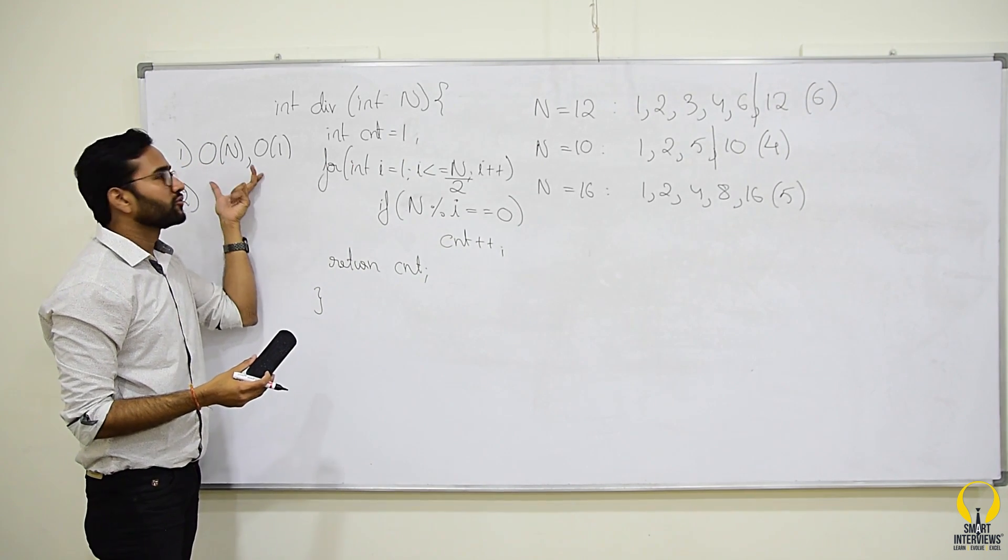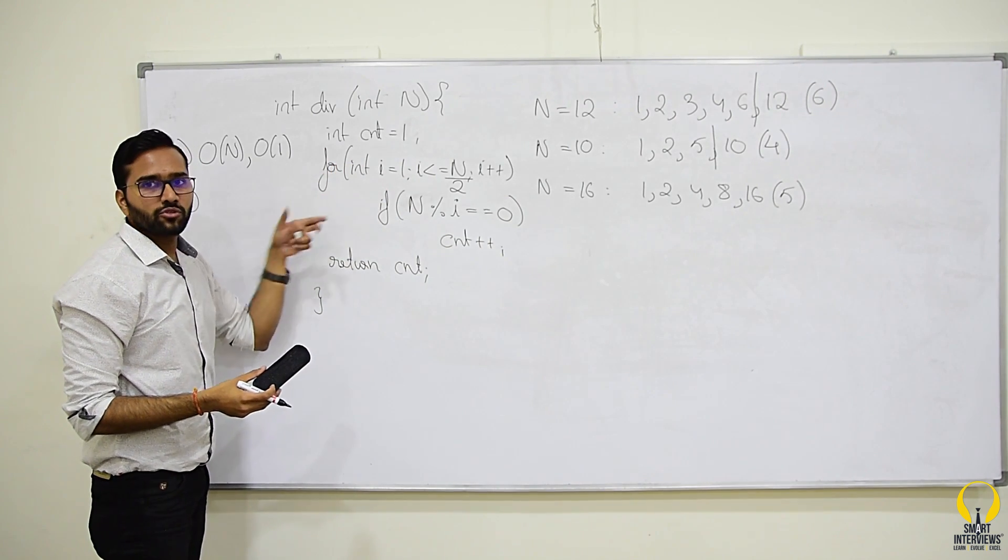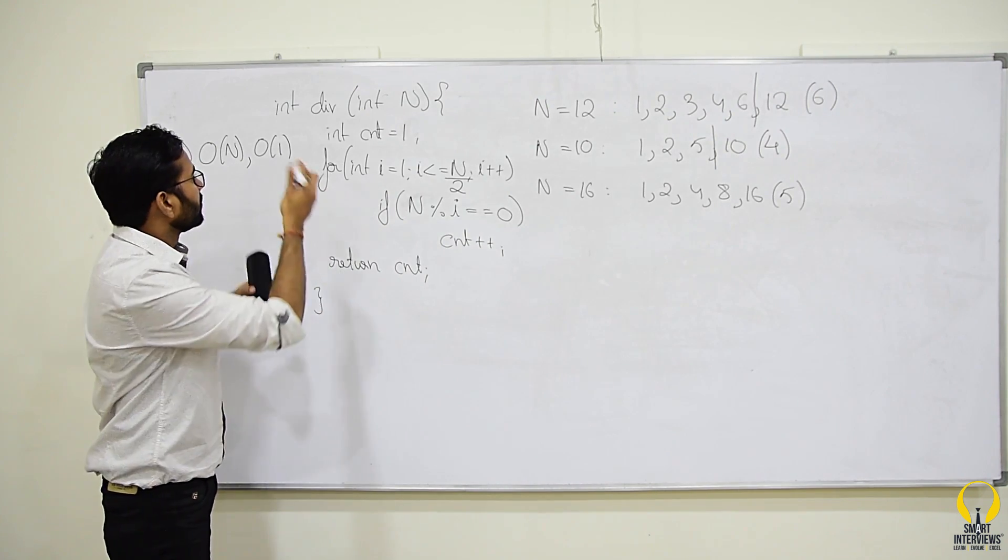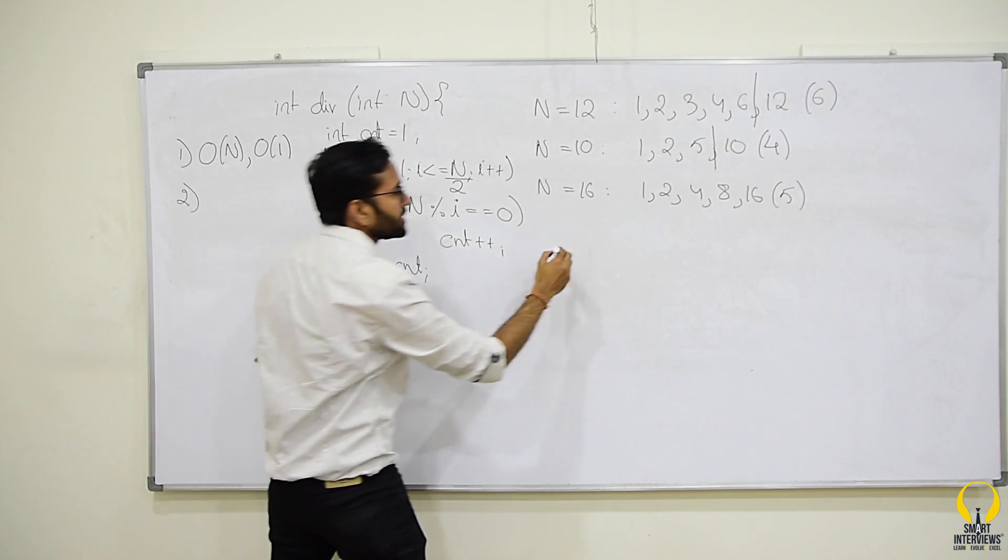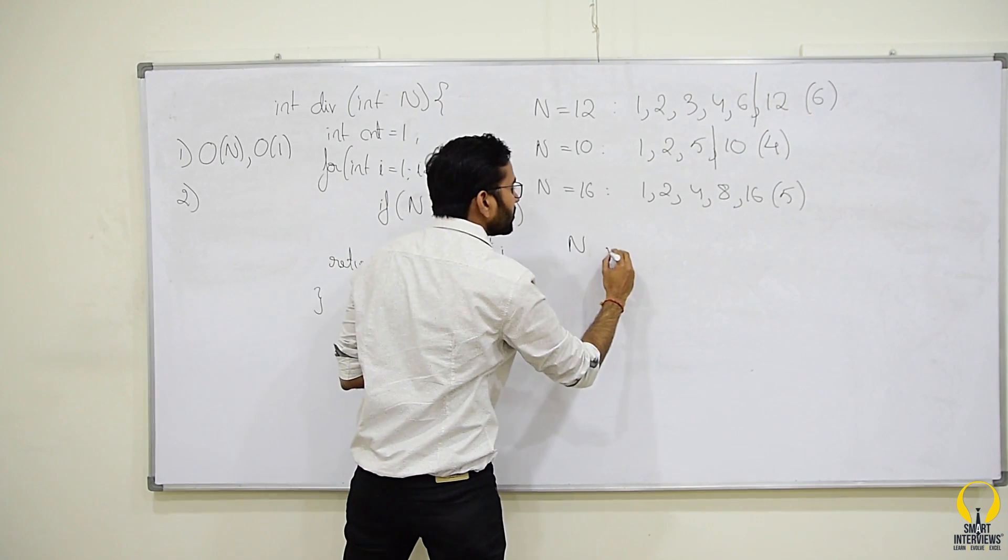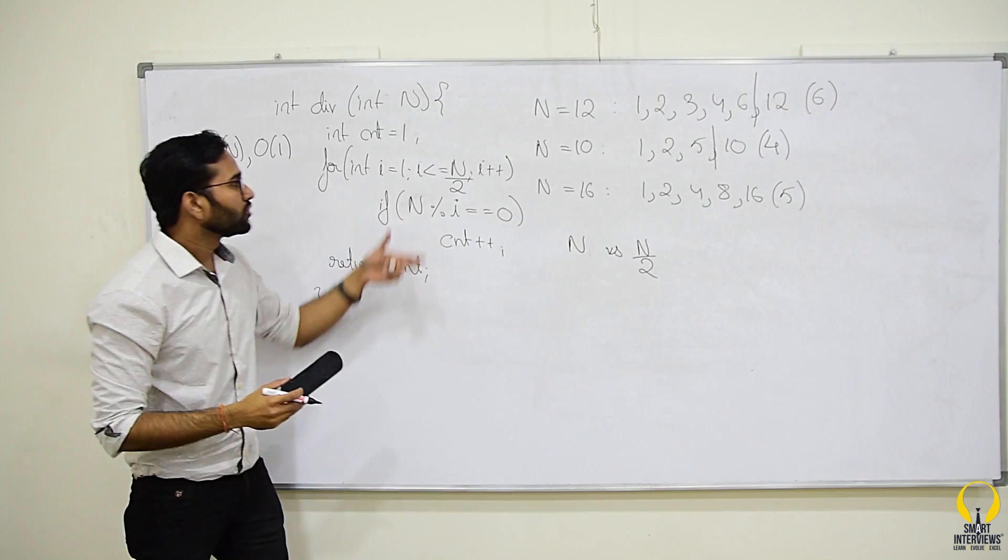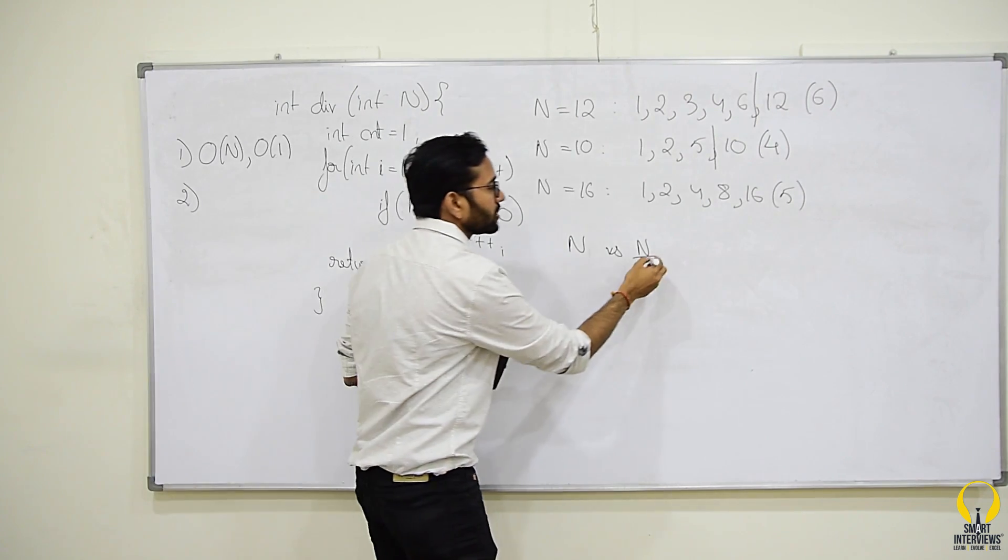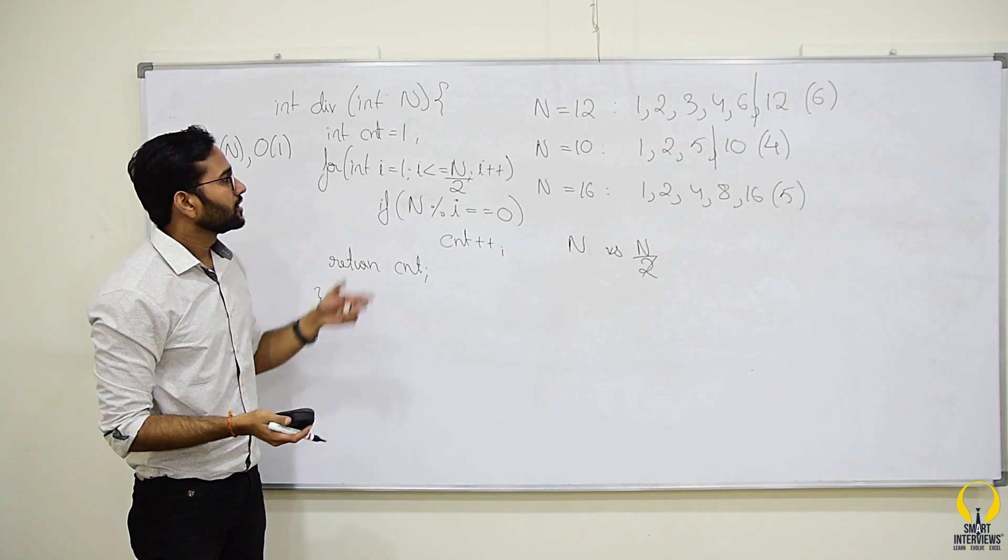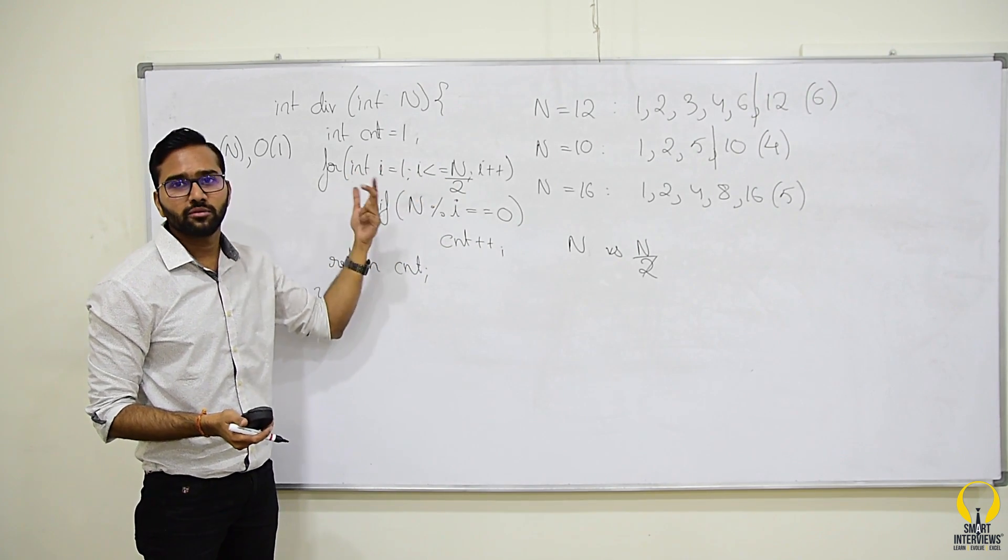Obviously, this is better than the brute force but in terms of big O, it comes out to be the same. For the previous solution, our loop iterate for n times. In this solution, the loop iterate for n/2 times. So, I hope you know about big O. In terms of big O, we will ignore the constant and this comes out to be same as big O of n. So, this helps a little but not to the best possible extent.